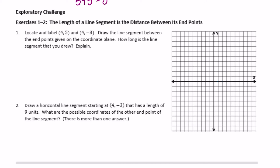Okay, 4 — 1, 2, 3, 4 — and then up 5. So that's (4, 5), and then (4, negative 3) would be right there. Draw the segment between the endpoints on the coordinate plane. So there's a line segment. How long is the line segment that you drew? Explain. So this is just what we did before — the length is 8.